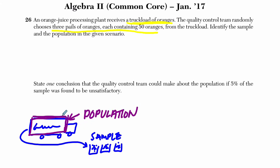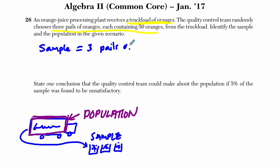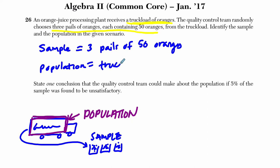We're trying to make some kind of statement about that truckload, so that's our population. Identify the sample and the population in the given scenario. To be brief, the sample equals the three pails of 50 oranges. And the population — that is equal to the truckload of oranges.